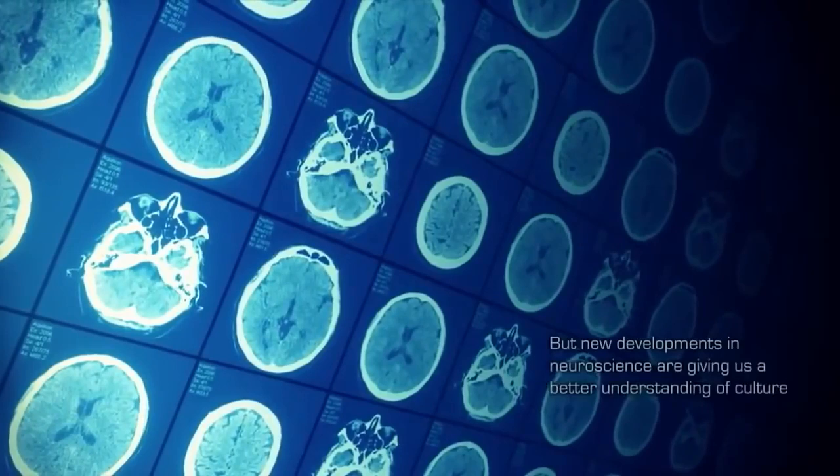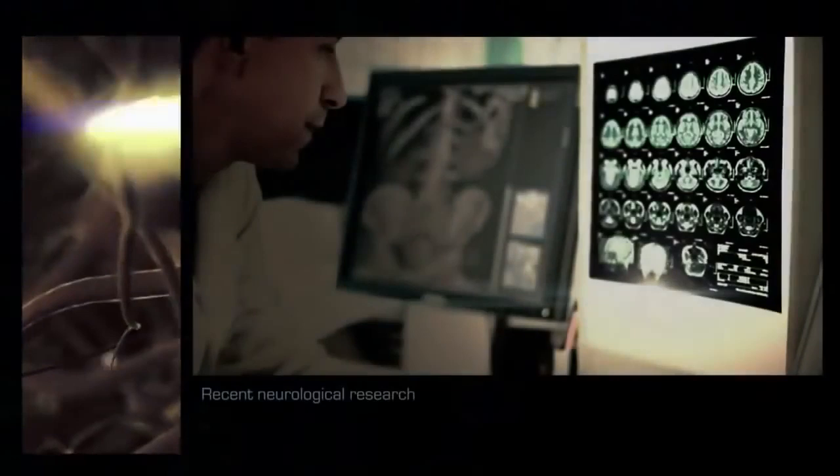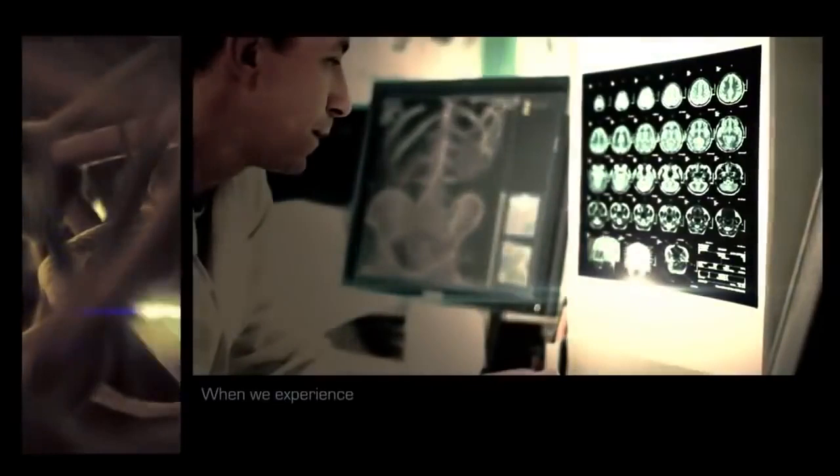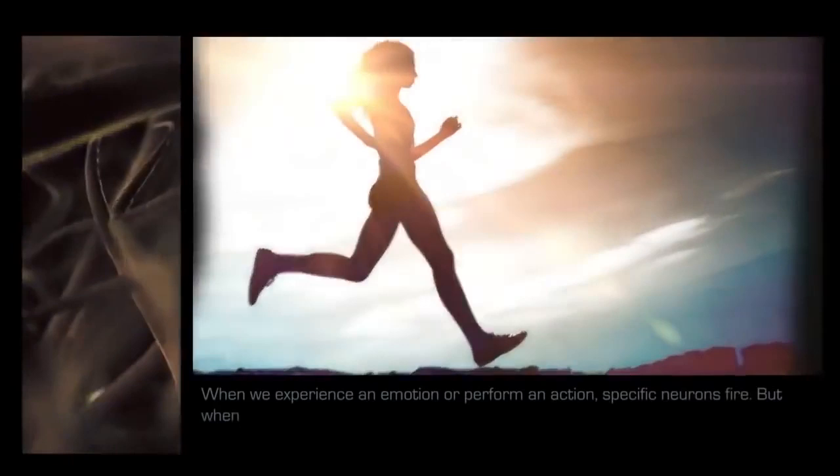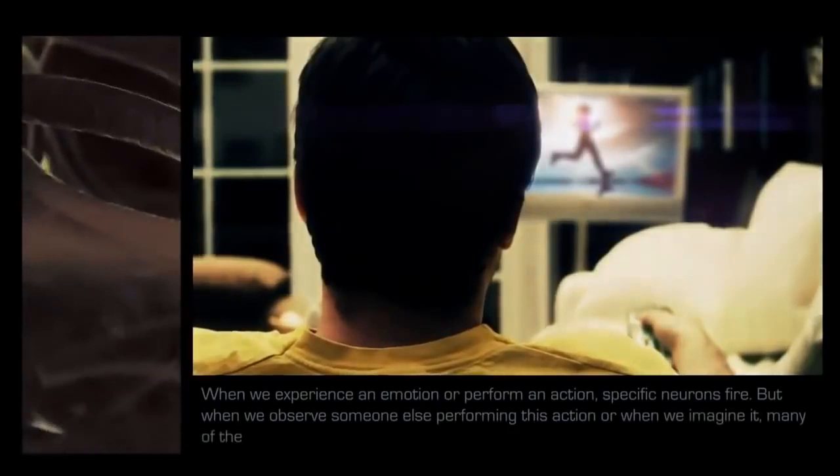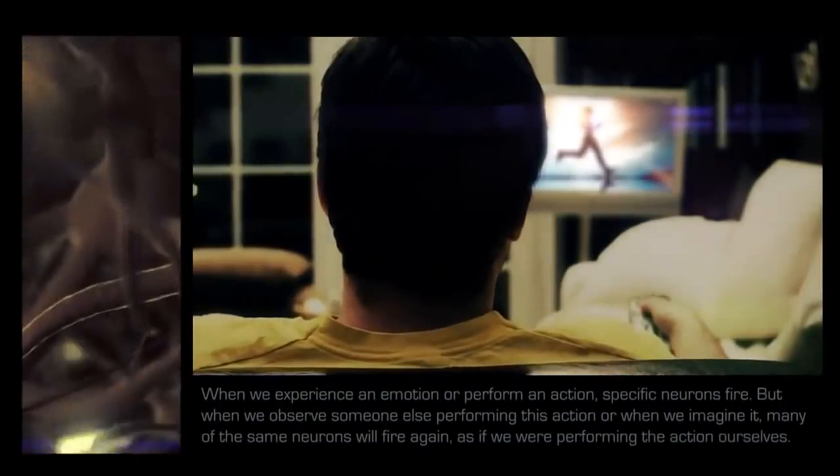But new developments in neuroscience are giving us a better understanding of culture and identity. Recent neurological research has confirmed the existence of empathetic mirror neurons. When we experience an emotion or perform an action, specific neurons fire, but when we observe someone else performing this action, or when we imagine it, many of the same neurons will fire again, as if we were performing the action ourselves.